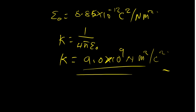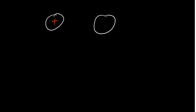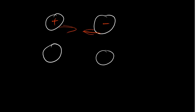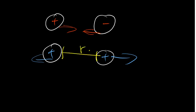Before we solve another example, we need to understand that if two charges have opposite signs — one positive and one negative — they will attract each other. If the two charges are like charges, both positive or both negative, they will repel each other. The distance between the two charges is what we call R, the separation distance.